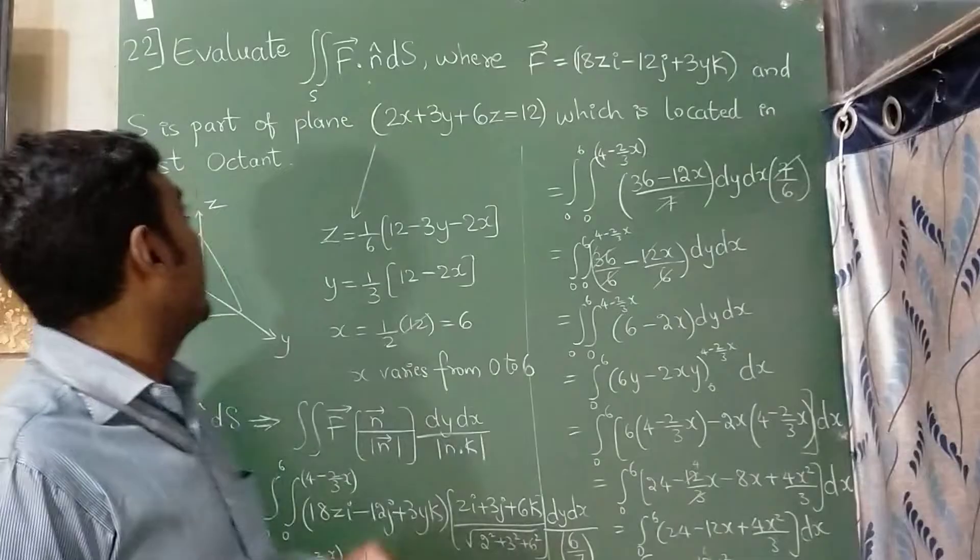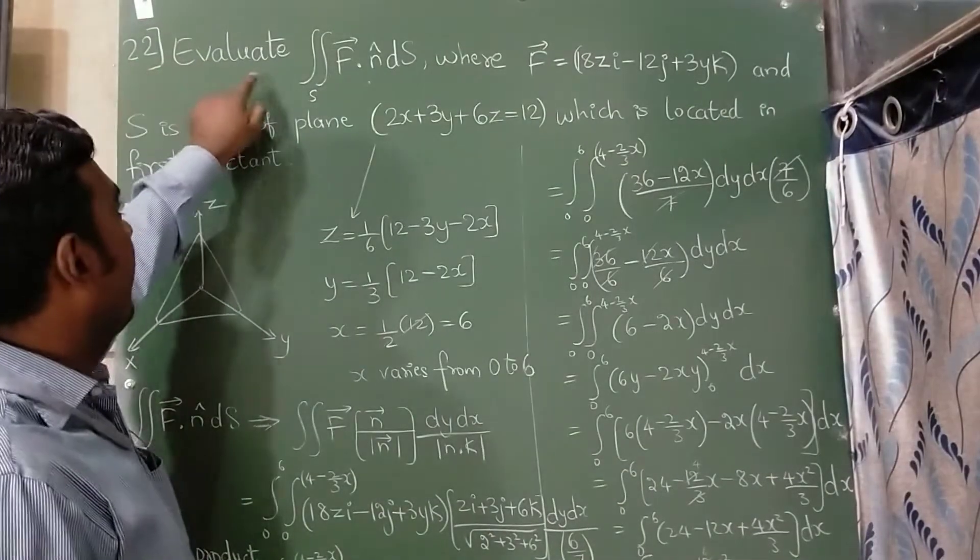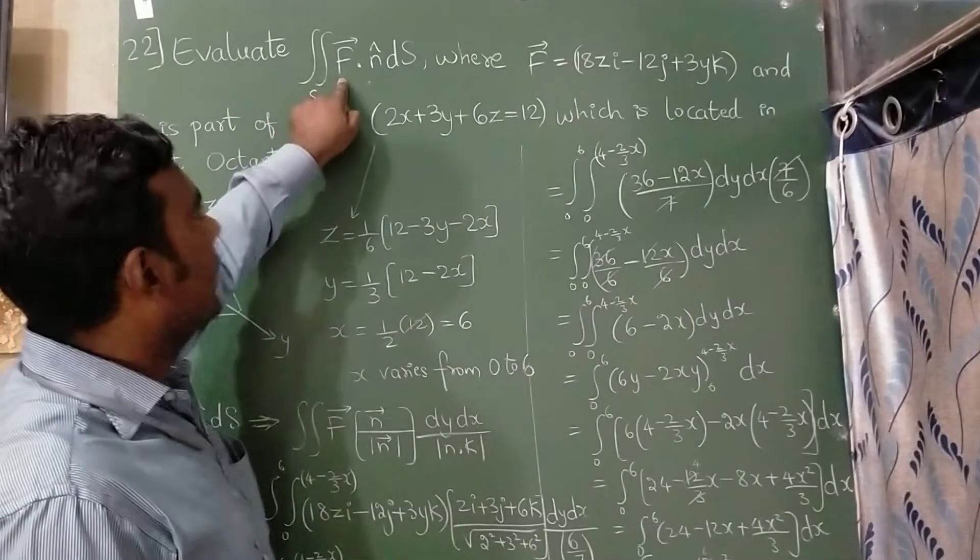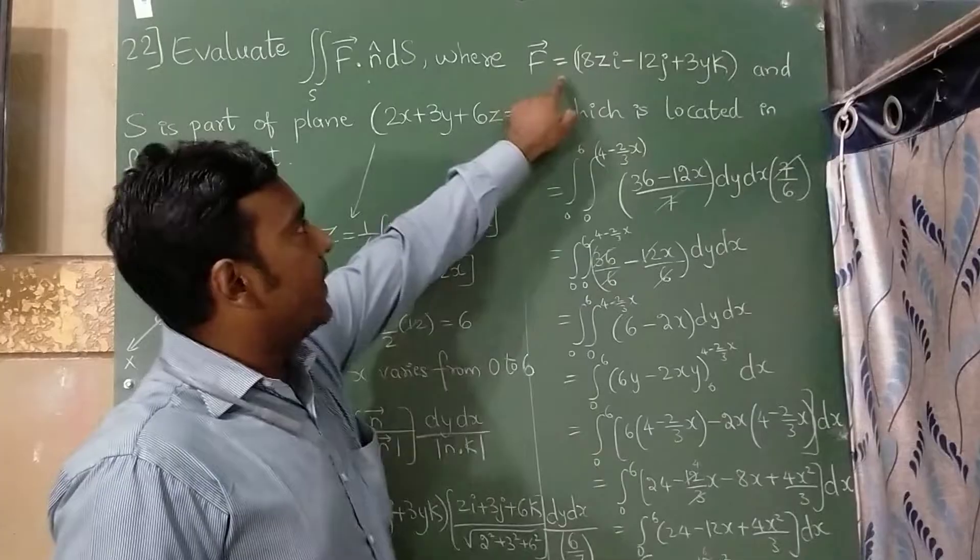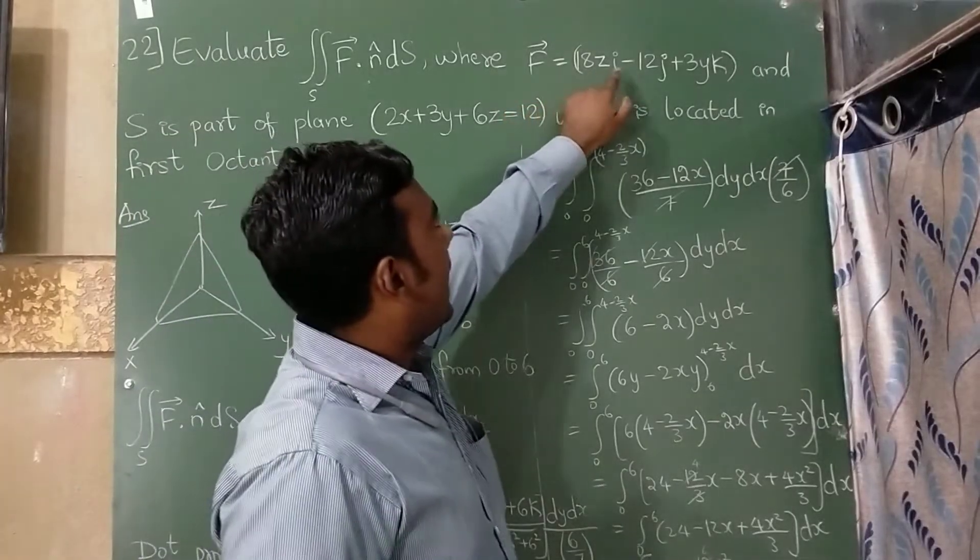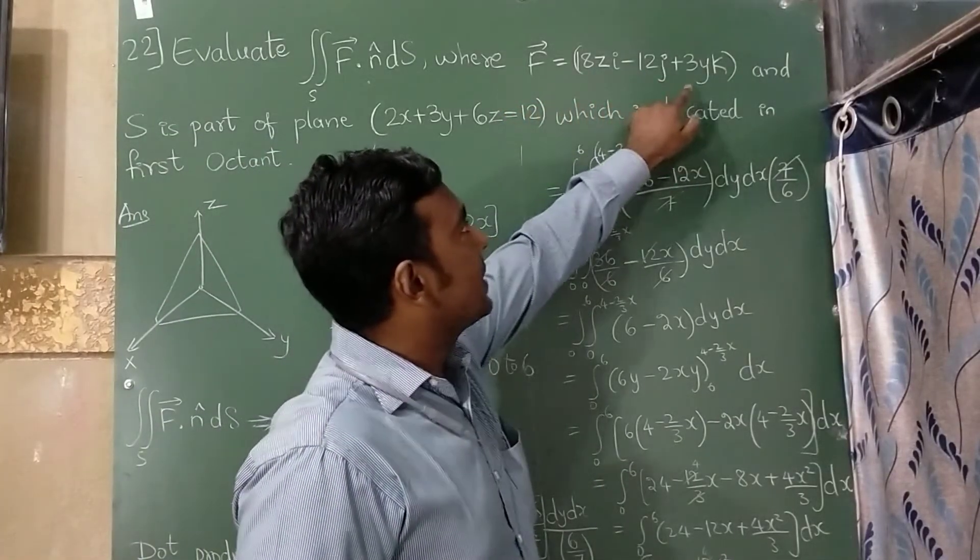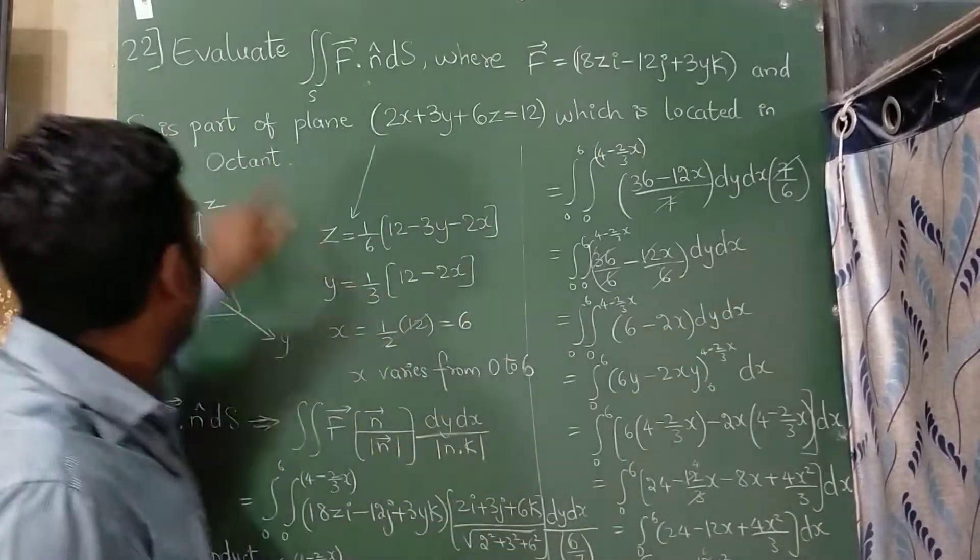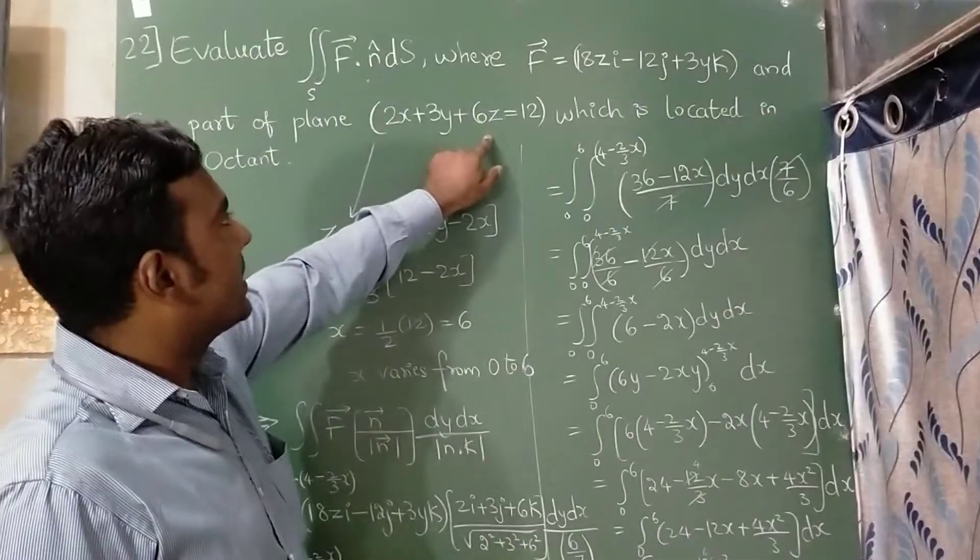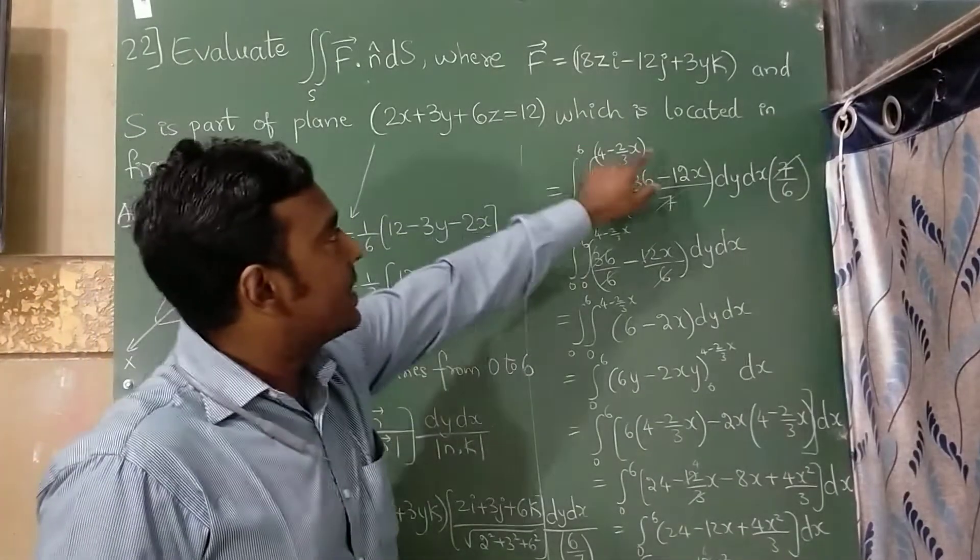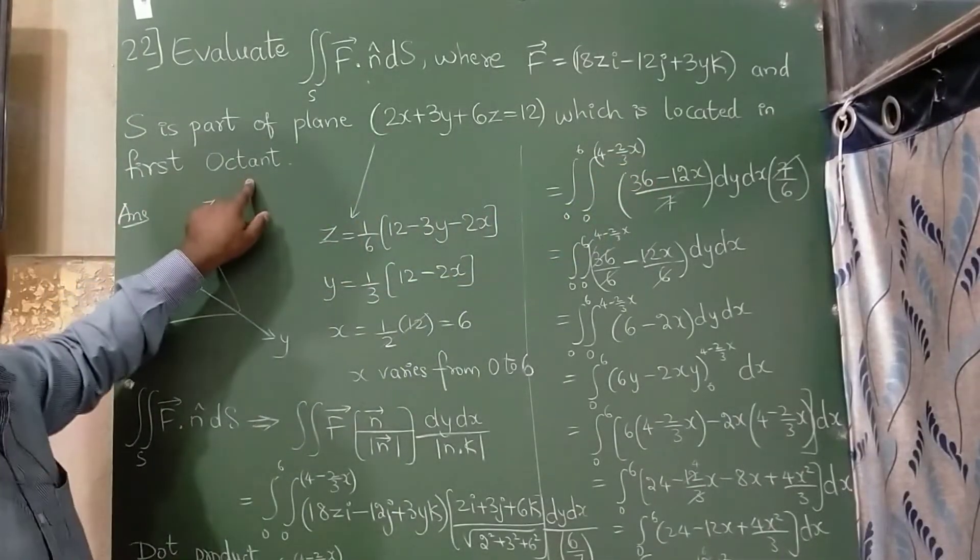So today I am going to teach question number 22: evaluate double integration of vector F dot n cap dS, where vector F is equal to 18z i minus 12j plus 3y k, and S is the part of the plane where 2x plus 3y plus 6z is equal to 12, which is located in the first octant.